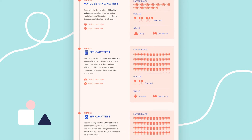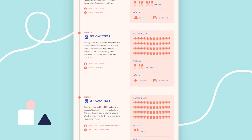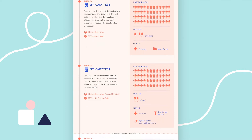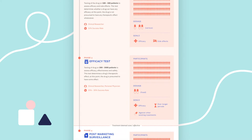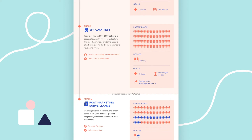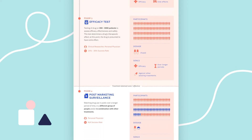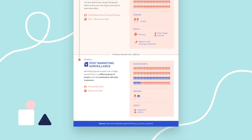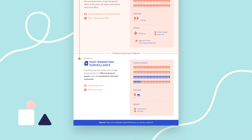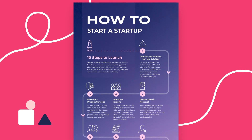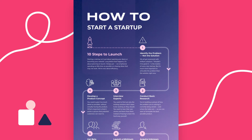The clinical trial template uses an icon matrix to provide a quick overview of differences between the numbers of participants and dosage across various stages of the trial. At the same time, it uses a timeline approach to guide the audience step by step through the entire process. This leads us to the next type: the timeline infographic.